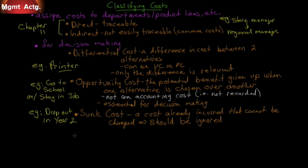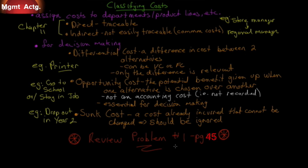I want you to go over review problem number one on page 45 of your text. This is critical. You must understand variable versus fixed versus mixed, direct versus indirect, and differential versus opportunity versus sunk cost. One cost can be classified under multiple categories — a cost can be variable and also a product cost that's direct. Do that problem. Trust me on this.